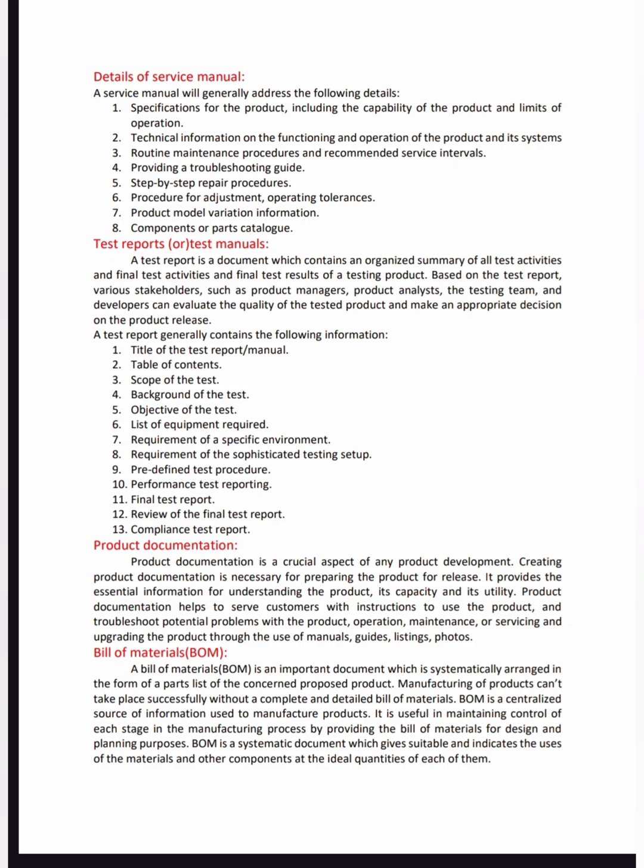The next topic is test reports and test manuals. A test report covers product testing, environmental testing, and various test types. The report includes the title of the test, table of contents, scope of the test, background, aim, objective of the test, required equipment, the specific environment in which the test must be performed, and the predefined procedure. Before the test, perform the test and produce a final test report review including compliance.